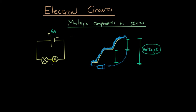Now let's talk about a device called the voltmeter. If I connect a device here, and let's call this V — this device, which is called a voltmeter, is able to measure the voltage across this component, this light bulb.